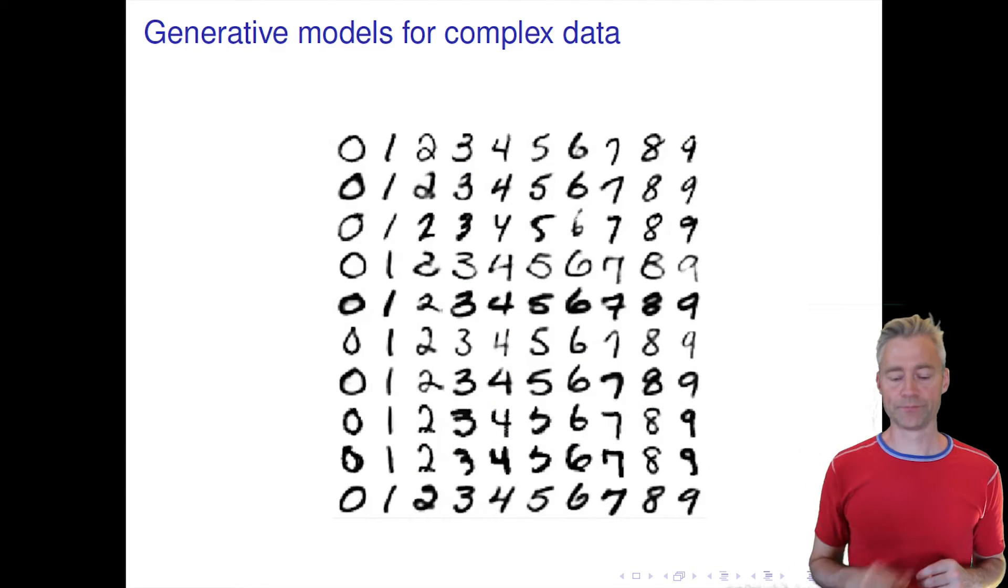We are interested in what are called generative models, and we're interested in these generative models for complex data. So you can imagine we have now trained an unsupervised model on a lot of MNIST images. Then we would like this model to have captured the statistics of natural images, in this case handwritten digits.